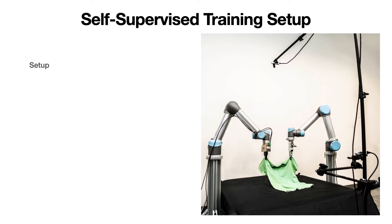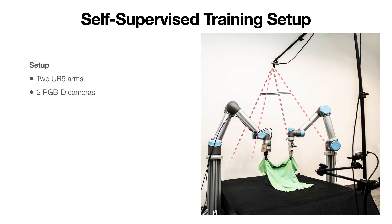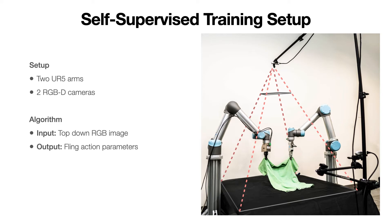In our experiments, we use two UR5 arms with the WSG50 and RG2 grippers placed on either side of a flat workspace. We use two RealSense RGBD cameras — one to take top-down images, whose frustum is shown here in the dashed pink cone, and one to take a front view of the workspace. Our policy takes as input the top-down RGB image, then outputs the flinging action parameters. The dual-arm system then executes the action with the help of the front view camera, then observes the delta coverage in the cloth as measured by the top-down camera. The entire system is trained in a self-supervised manner to take actions which maximize the cloth's delta coverage.